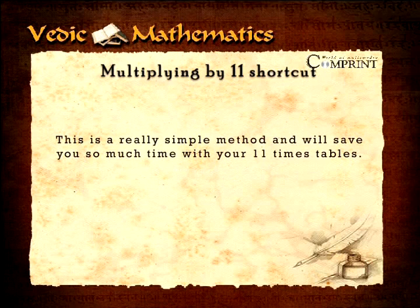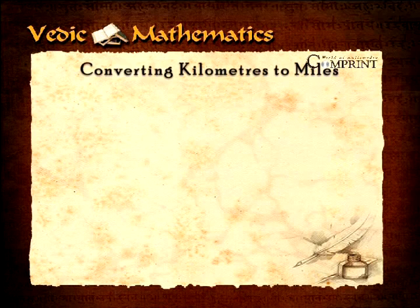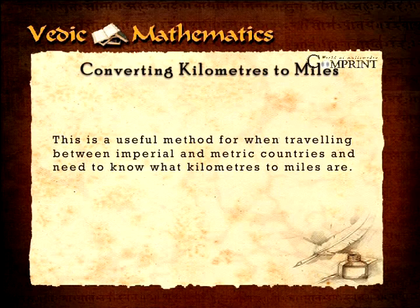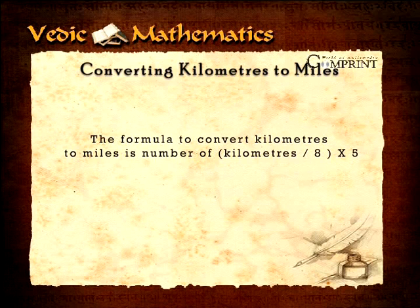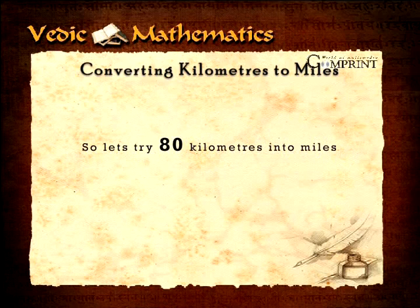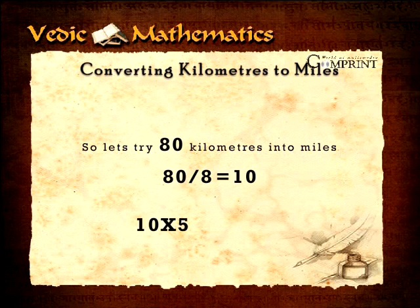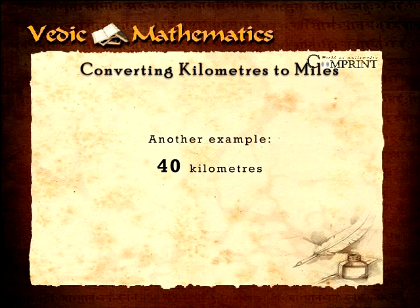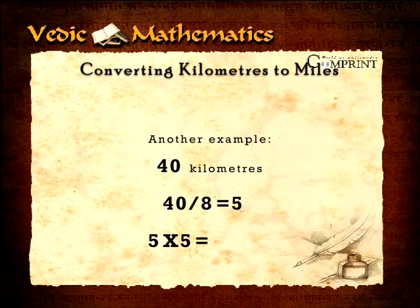This is a really simple method and will save you so much time with your eleven times table. Converting kilometers to miles: this is a useful method for when traveling between imperial and metric countries. The formula is the number of kilometers divided by eight, multiplied by five. So eighty kilometers: 80 ÷ 8 = 10, times 5 equals 50 miles. Forty kilometers: 40 ÷ 8 = 5, times 5 equals 25 miles.